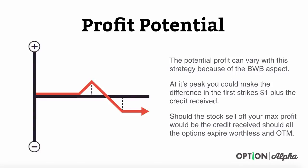The profit potential can vary with these strategies because of the broken wing aspect to it. At its peak, you could make the difference in the first strikes — again $1 — plus the credit received. This is if the stock closes right at the peak of this strategy, which would be right at the short strike. Remember, you sold two of those options. That's ideally where we want the stock to close.